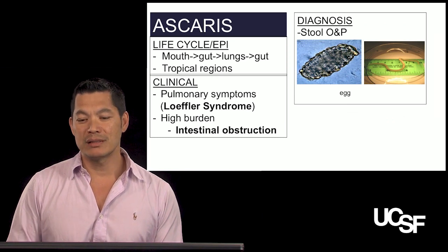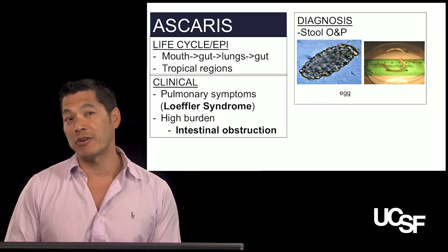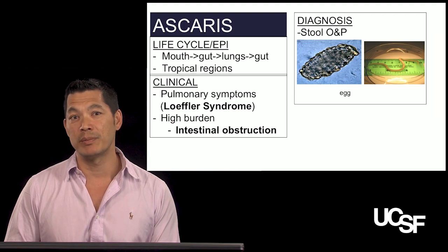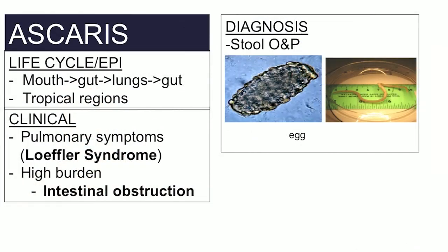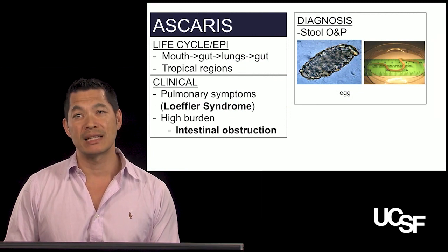How do you diagnose Ascaris? You can diagnose it by symptoms, but very few people have pulmonary or intestinal obstruction symptoms. Most people are diagnosed through ova and parasites on a stool sample. You can certainly pass a worm — that's what happened in this particular case — but you can also find eggs of the organism in the stool sample.